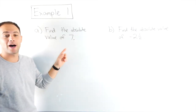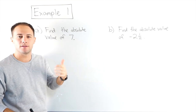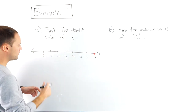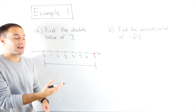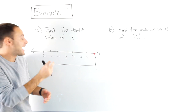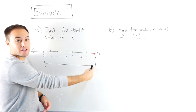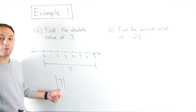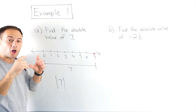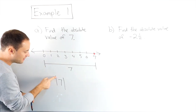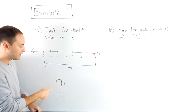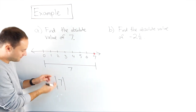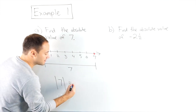Example one, part A: find the absolute value of seven. We're talking about how far away is seven from zero on a number line. So I'm going to draw a number line — we're here at seven. What is the distance from zero to seven? I can count: one, two, three, four, five, six, seven. It's pretty obvious that it is seven. So the absolute value of seven is seven. One quick tip: make sure that the vertical lines are longer than your numbers, otherwise it can quickly look like 171. So make sure those vertical lines are longer than your numbers.